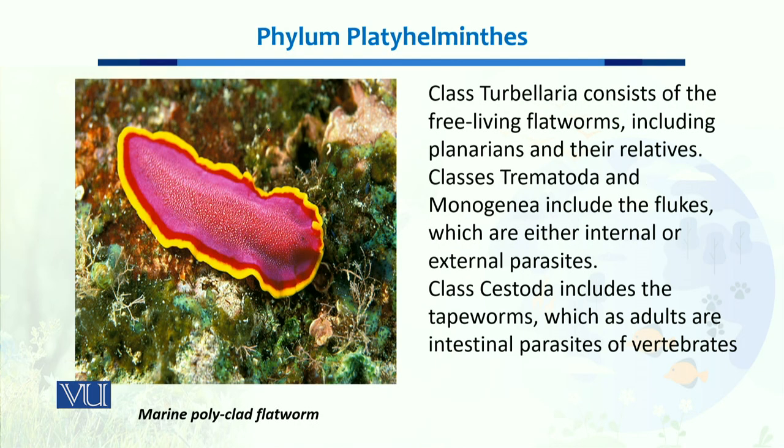Class Turbellaria consists of mostly free-living flatworms, like the organism shown in this diagram, and they include planarians and their relatives. Class Trematoda and Monogenea include the flukes, which are either internal or external parasites. Class Cestoda includes tapeworms, which as adult organisms are intestinal parasites of almost all vertebrate organisms.